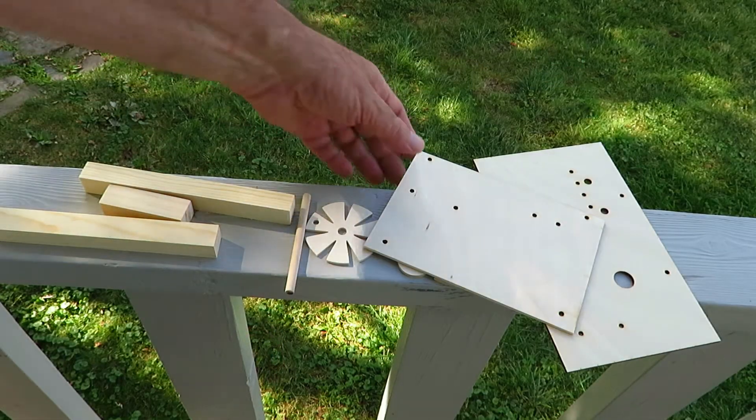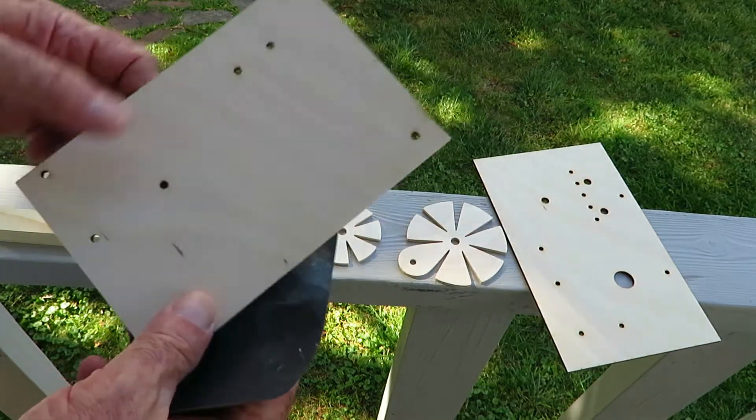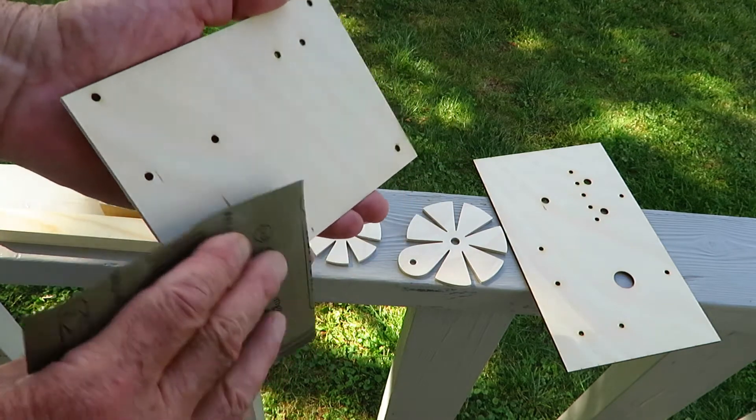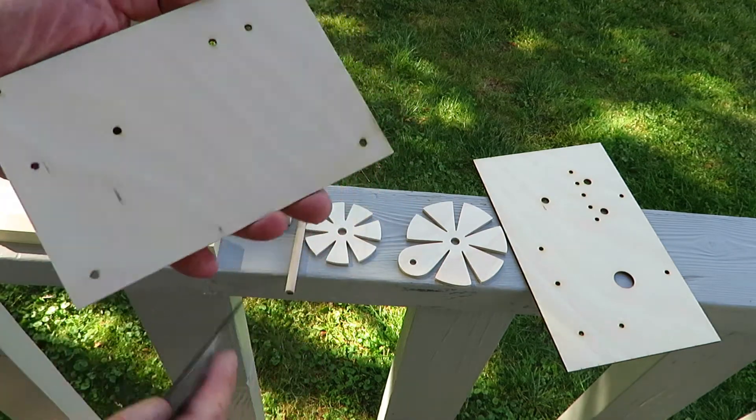Before I assemble the set, I'm going to take the wooden parts and lightly sand them with some 600 grit sandpaper and then give them a clear coat.